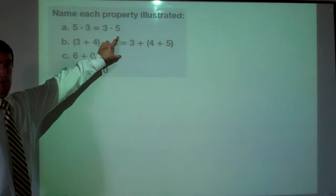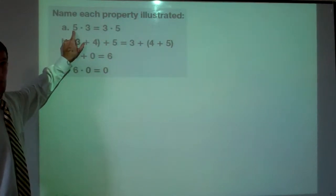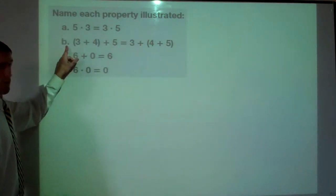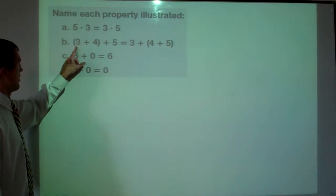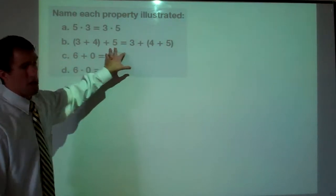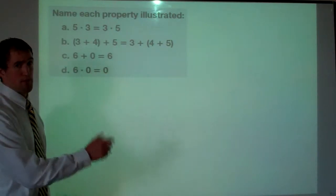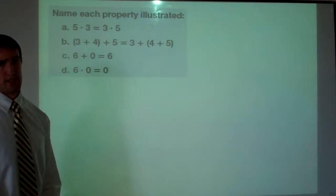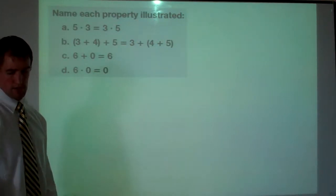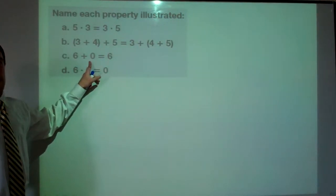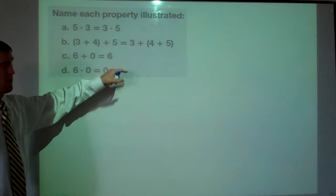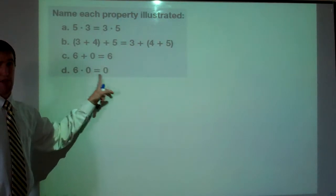Let's quickly identify these properties. Five times three equals three times five — that's true, we switched the order of multiplication, so this is commutative. For b, (3+4)+5 versus 3+(4+5) — the order didn't change, three, four, five, only the parentheses location changed, so that's associative. For c, adding zero is our additive identity. For d, six times zero gives zero — that's the zero property of multiplying.